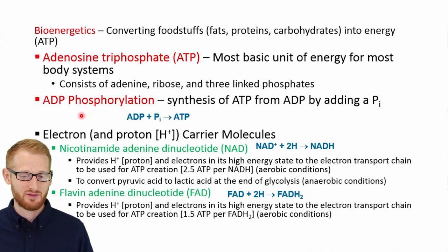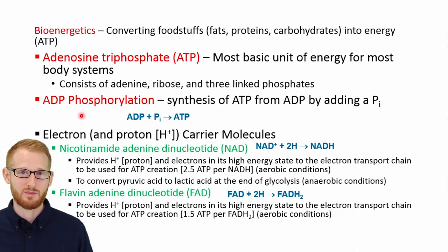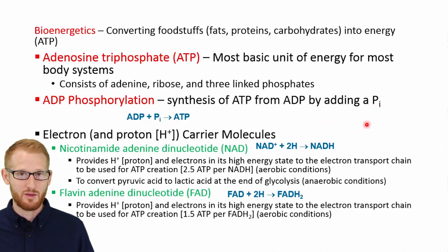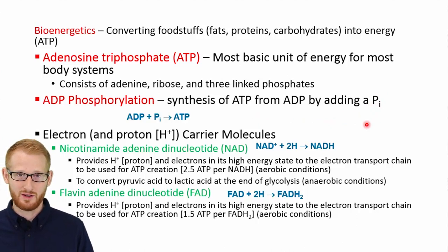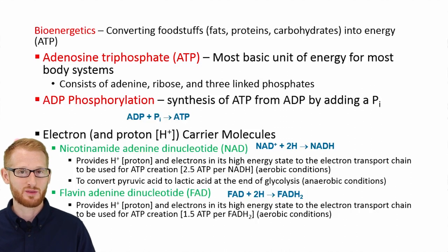ADP, or adenosine diphosphate — two phosphates instead of three — can be phosphorylated into ATP; that's called ADP phosphorylation. That's the process of making ATP from ADP and an inorganic phosphate, adding a little energy to that bond so it can be broken later and used for movement. The body also has electron carrier molecules that are used to make ATP when we get to the electron transport chain.